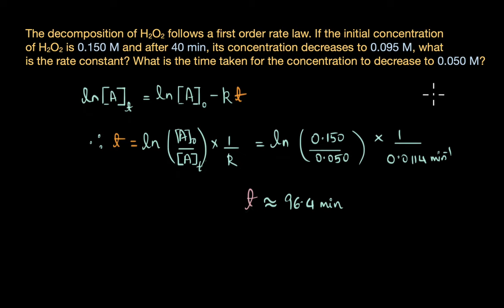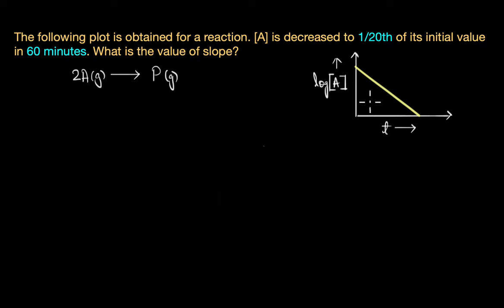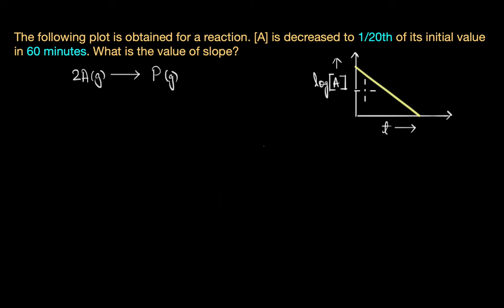It's a pretty straightforward calculation. Let's look at one more question. It is given that the following plot of log A versus t is obtained for the reaction 2A → P. The concentration of A decreases to 1/20th of its initial value in 60 minutes, and we need to figure out the value of the slope. As you can see, the log of concentration of A varies linearly with time with a negative slope.